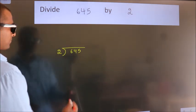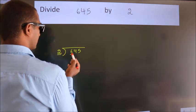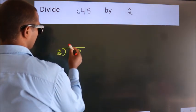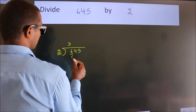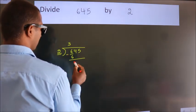Next. Here we have 6, here 2. When do we get 6? In 2 table, 2 threes, 6. Now, we should subtract. We get 0.